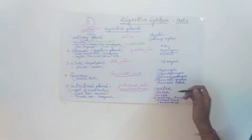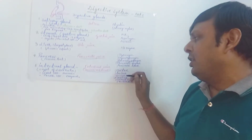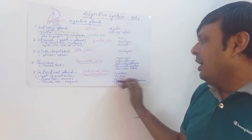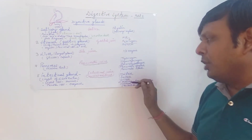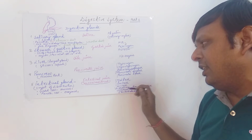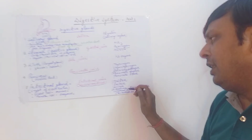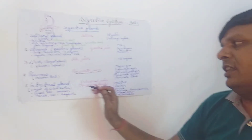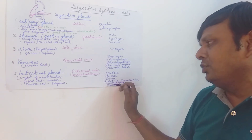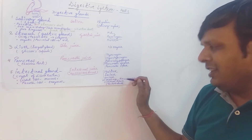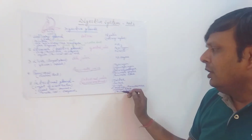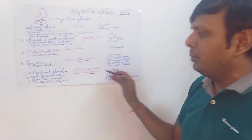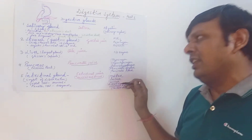The disaccharide-digesting enzymes in succus entericus are maltase, lactase, and sucrase. Maltase mainly digests maltose, lactase mainly digests lactose sugar, and sucrase mainly digests sucrose sugar. Other protein-digesting enzymes in succus entericus are dipeptidase and aminopeptidase. A lipid-digesting enzyme called intestinal lipase is also present, along with nucleotidases.